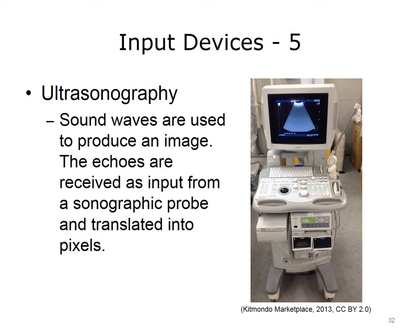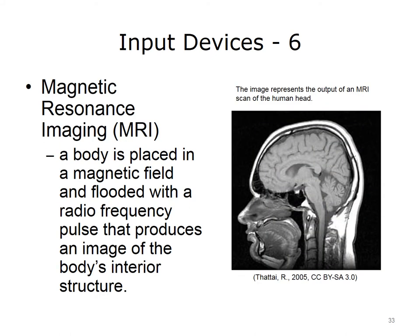In the image on this slide, there are a number of input devices connected to a computer through device ports. The software recognizes the input and then outputs it on the screen. Echoes are received as input from a sonographic probe and then translated into image output on the screen. One final healthcare-related input device is a Magnetic Resonance Imaging or MRI scanner. A body is placed in a magnetic field and flooded with a radio frequency pulse that produces an image of the body's interior structure. The image shown represents the output of an MRI scan of a human head.